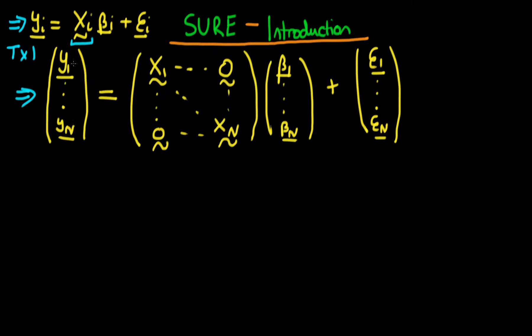So when we stack the dependent variables on top of one another we actually get a system which is NT by 1 in dimensions, because each individual vector is T observations and when I stack N of them on top of one another I get NT observations of the dependent variable.